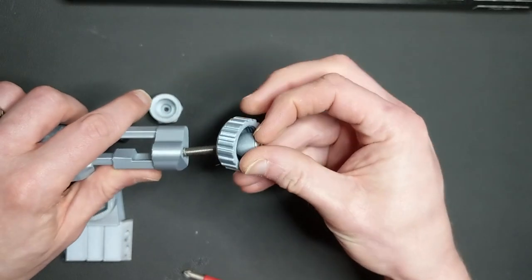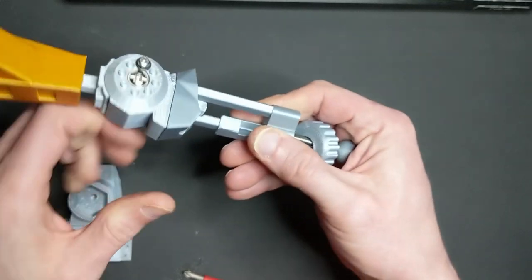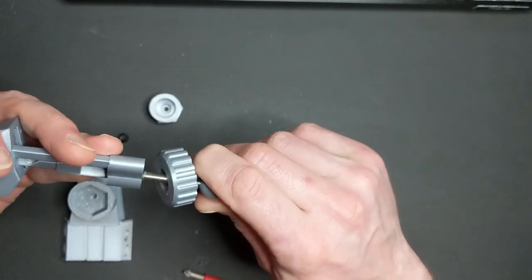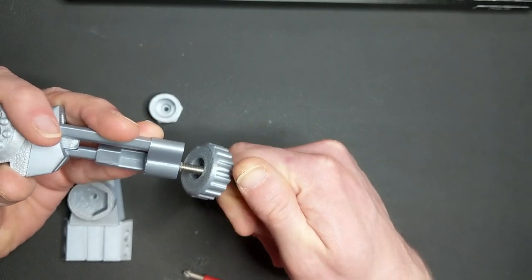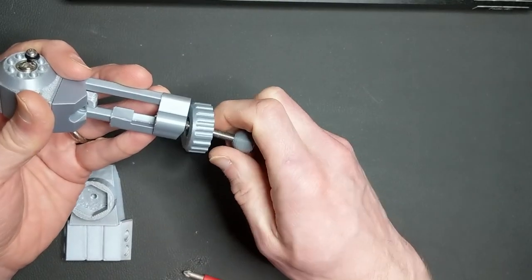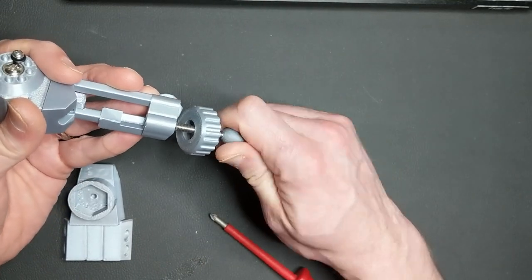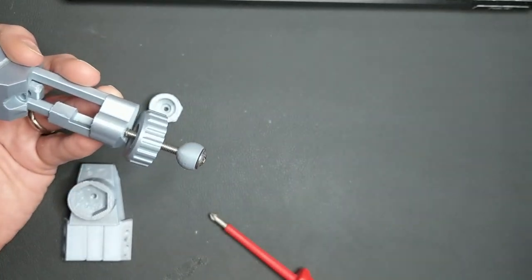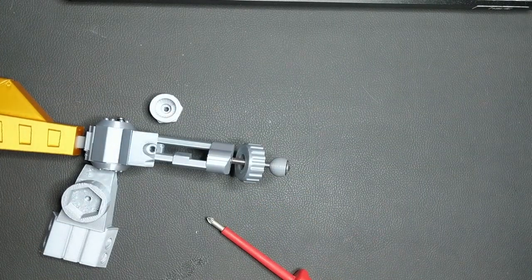The process for the foot is pretty much the same—that slots through there, then that threads into that, as with the other leg. There is space to put a nut in that side of it to keep it sitting at the right placement, but I haven't found that we needed that.